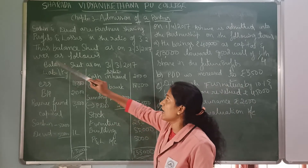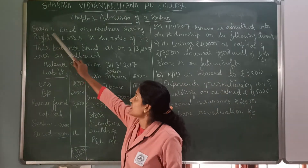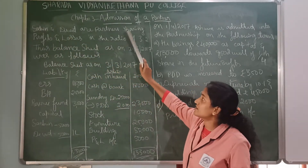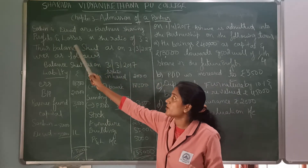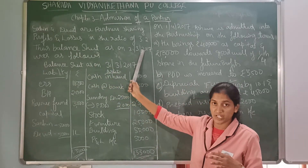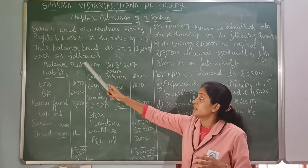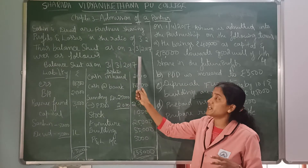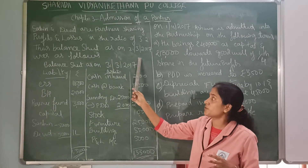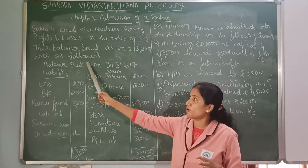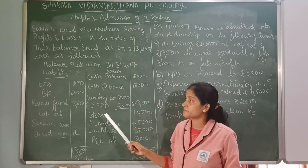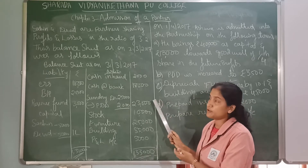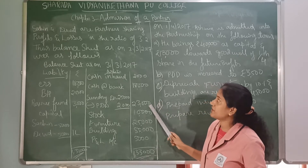So here we have Sachin and David as partners sharing profits and losses in the ratio of 3:2. Their balance sheet as of 31st March 2017 was as follows, and the balance sheet is given for 31-3-2017.